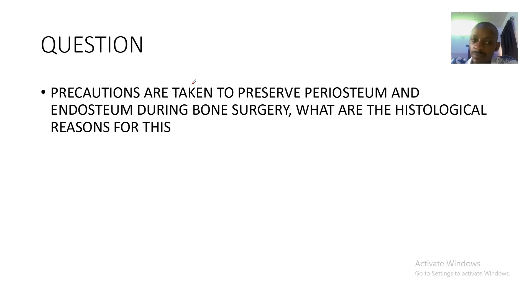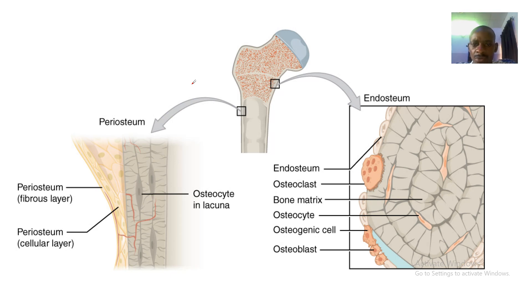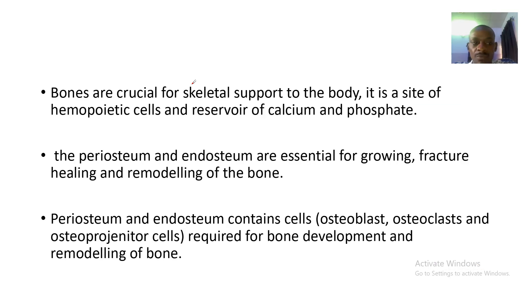What are the histological reasons for this? The endosteum is the innermost layer, while the periosteum is the outermost layer of bone.